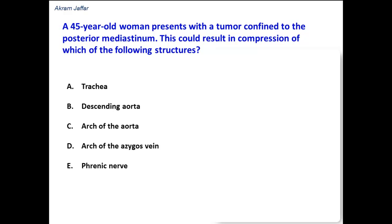A 45-year-old woman presents with a tumor confined to the posterior mediastinum. This could result in compression of which of the following structures? One of these structures should be present in the posterior mediastinum so that it will be compressed by the tumor. Other structures are not present in the posterior mediastinum. So to start with, we need to define what is the posterior mediastinum.